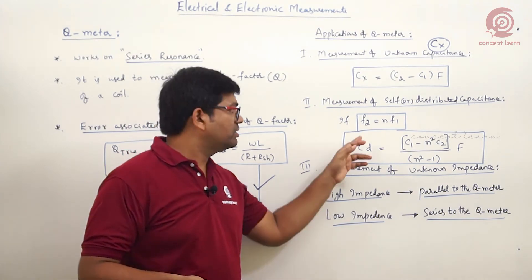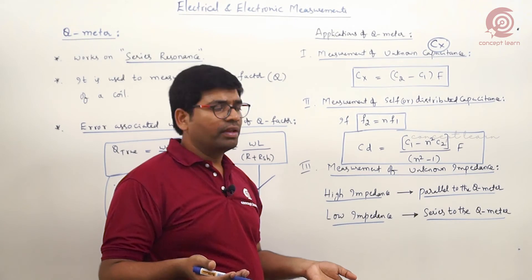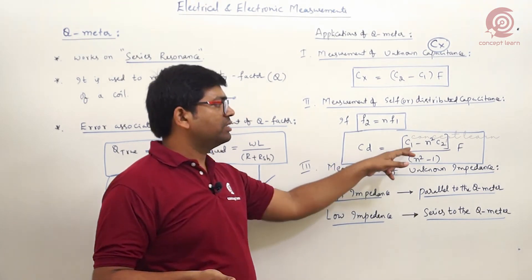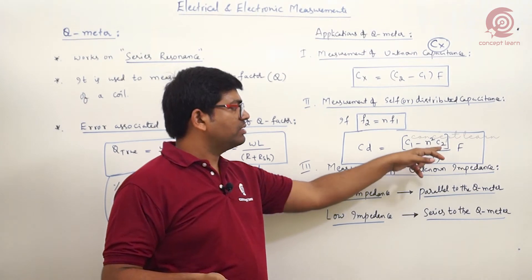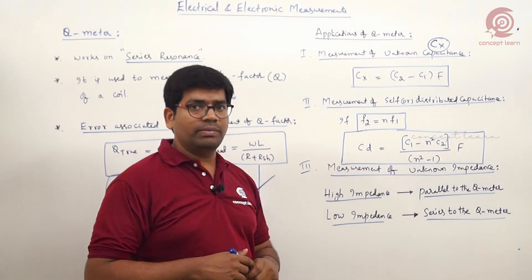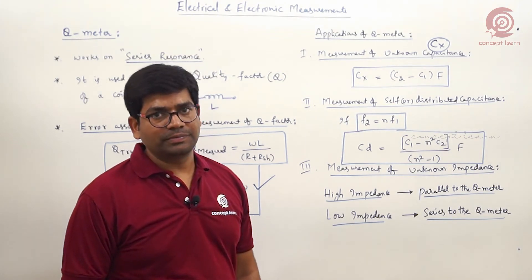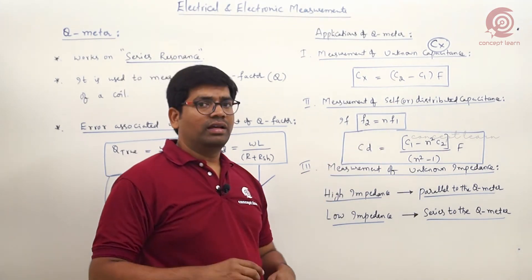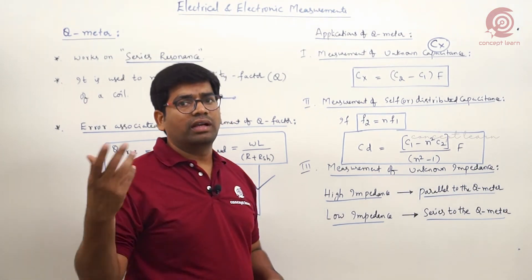Suppose at f1 we are resonating and we are getting the capacitance C1. Second time we are resonating the circuit to frequency f2, which is n times of the first one. Then distributed capacitance expression is (C1 - n²C2)/(n² - 1). This will be the expression for self or distributed capacitance.